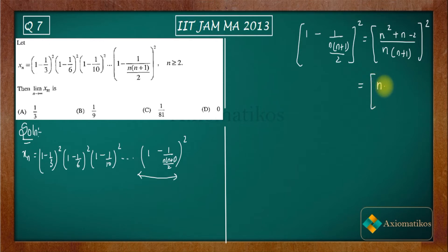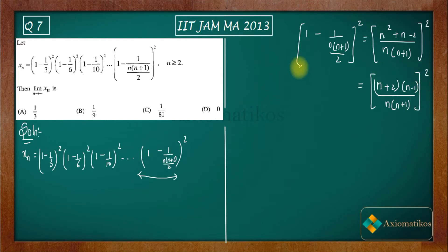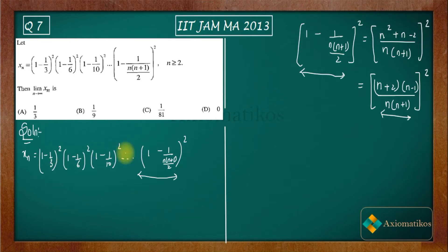Factorizing the numerator, you end up with (n+2)(n-1). This conversion will be useful in a moment. According to this, you can write every term in a specific form. Also note that n is greater than or equal to 2, which we need to keep in mind.